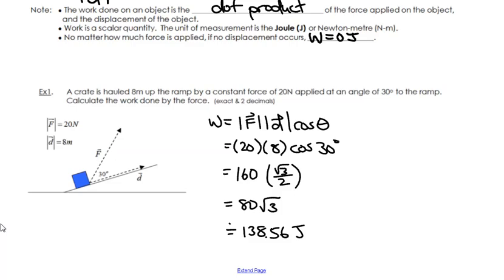If no displacement occurs — if your D is zero — it'll make all of the work zero. Even if you're pushing or applying a force onto an object and it doesn't move, technically no work has been done.